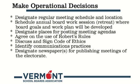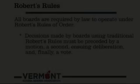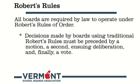Other items include agreeing on the use of Roberts Rules, discussing and agreeing on the code of ethics, and identifying communication practices that will best serve the board, the community, and the school itself. Finally, the board needs to designate the newspapers for publishing meetings in order to inform the electorate of the work of the board.